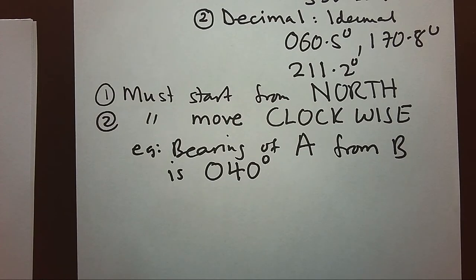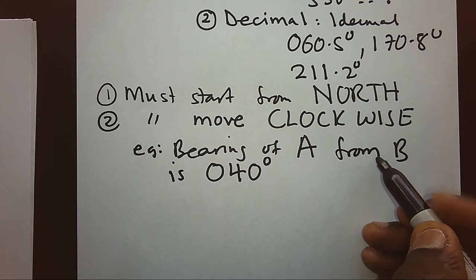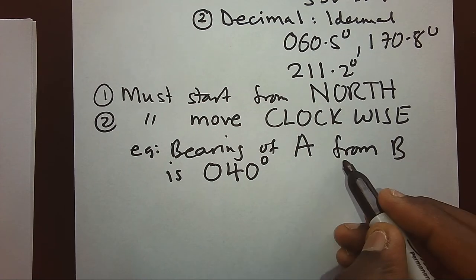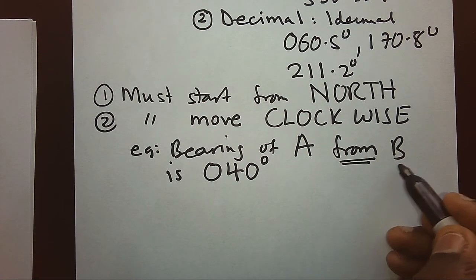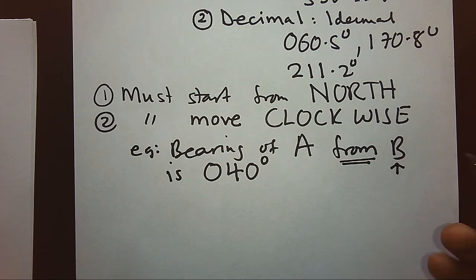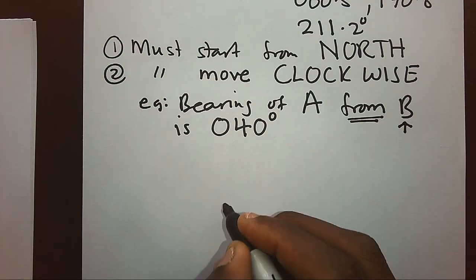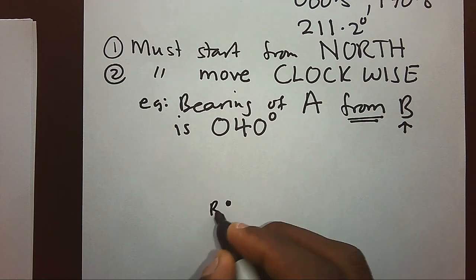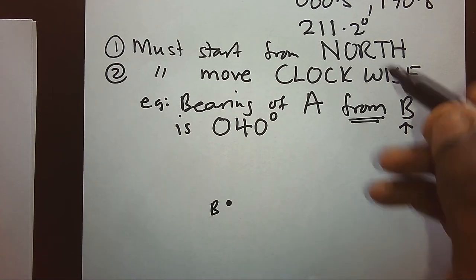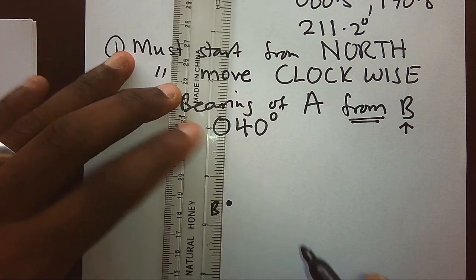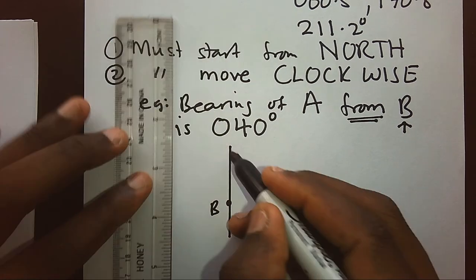Now, when you read this example properly, A from B, the word 'from' tells us that we are going to be starting at B in order to see A. Now let's position our B - that's our B. We said we must have a north. Now we have to put our north like that and this is our north.